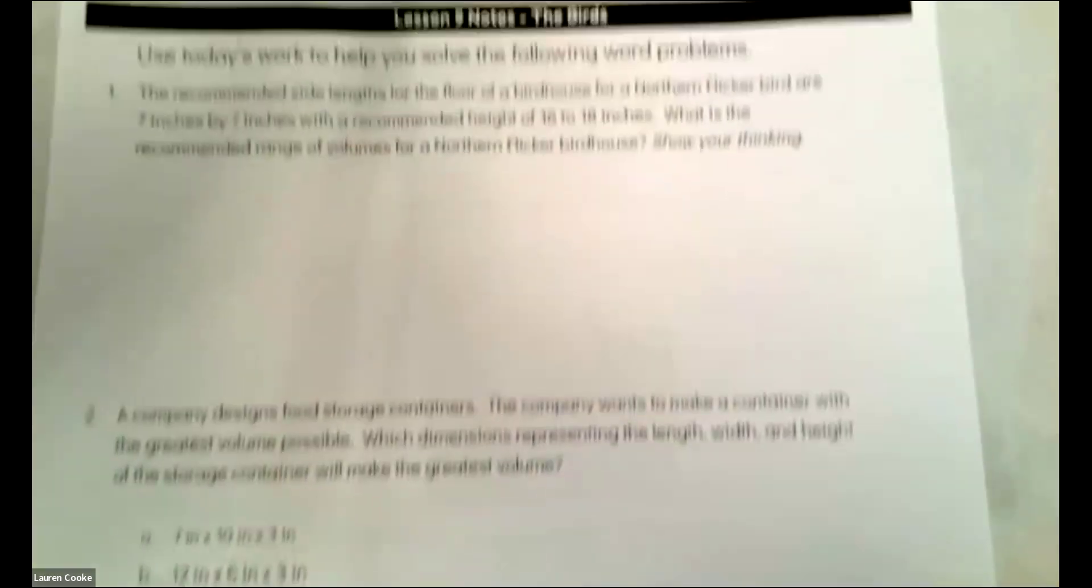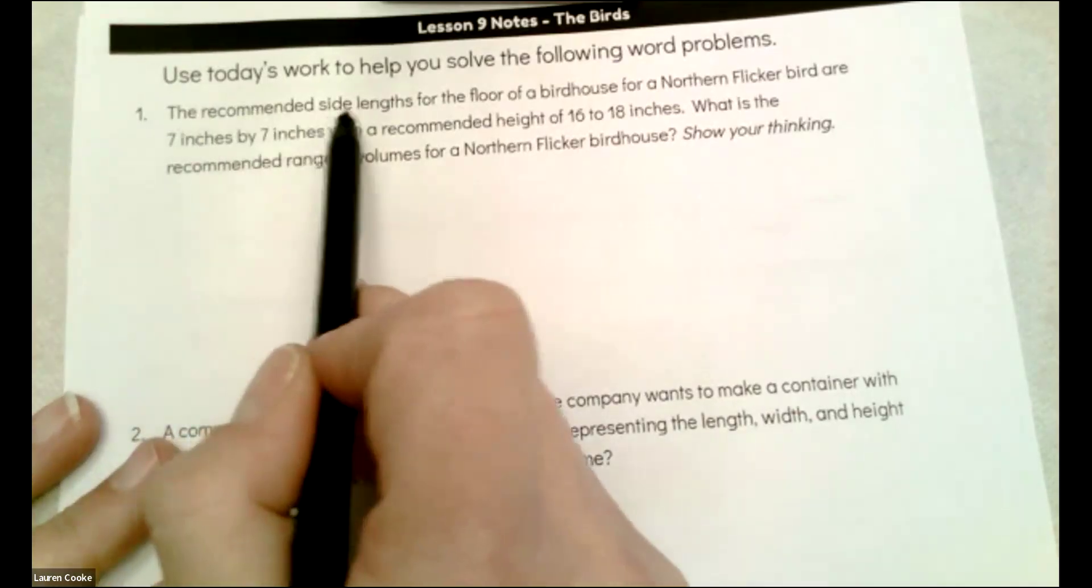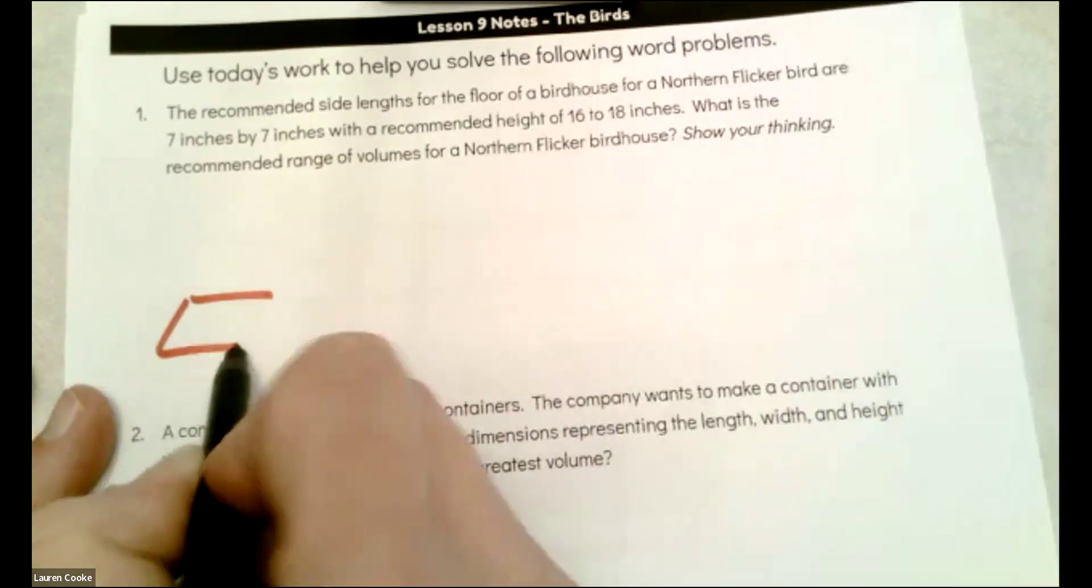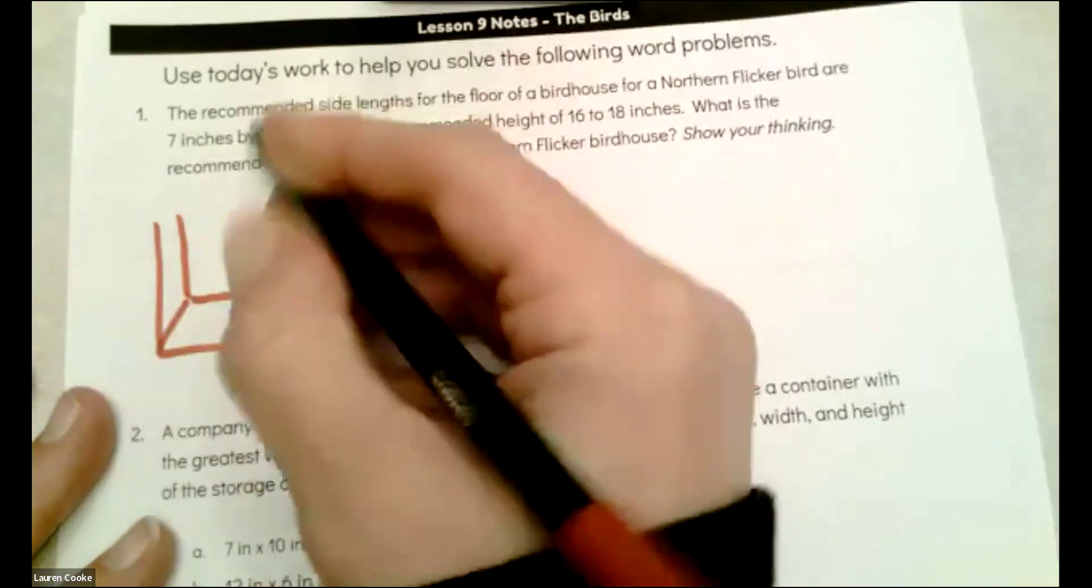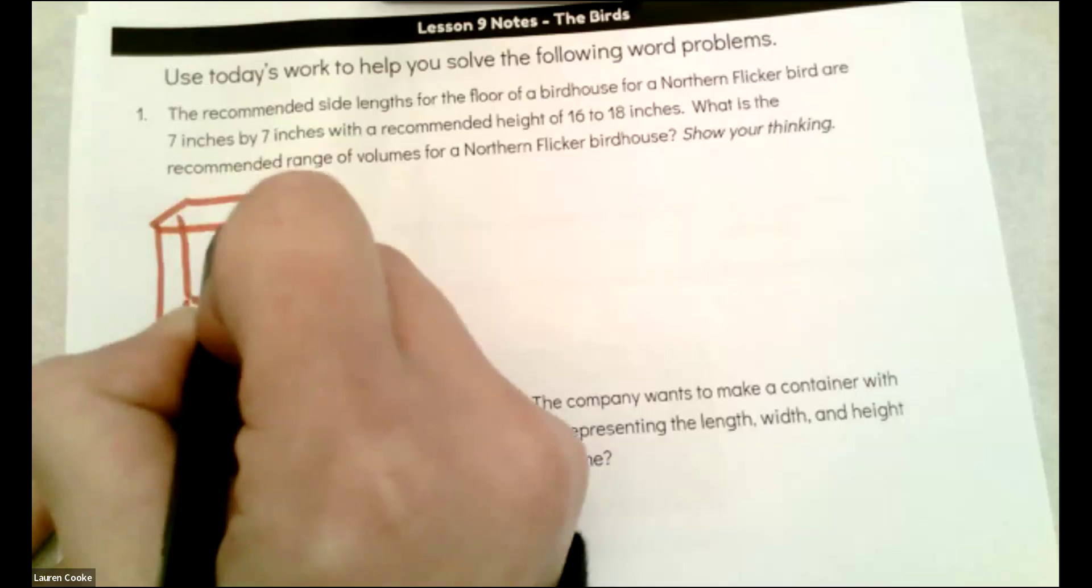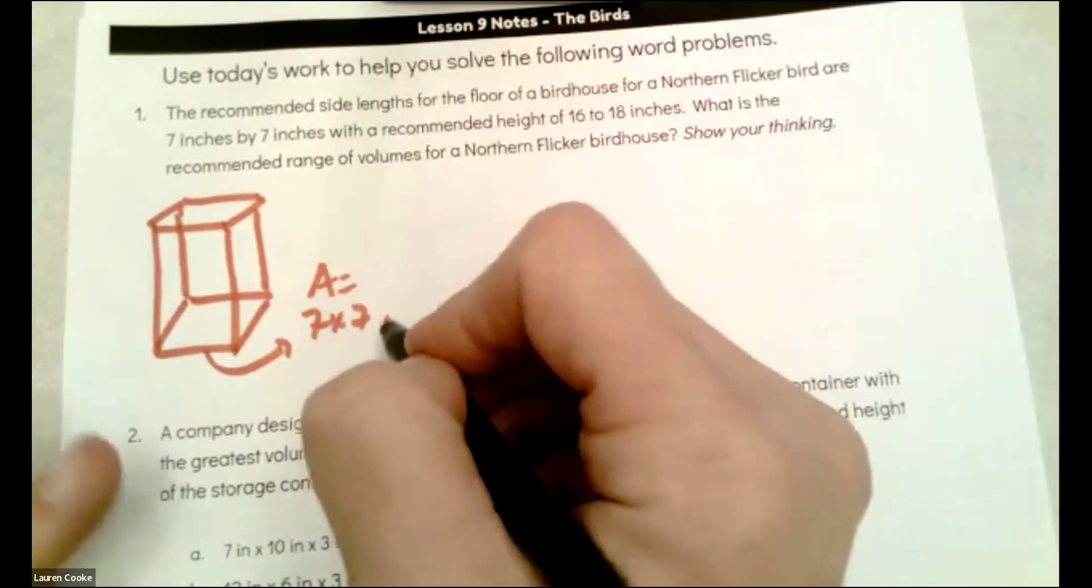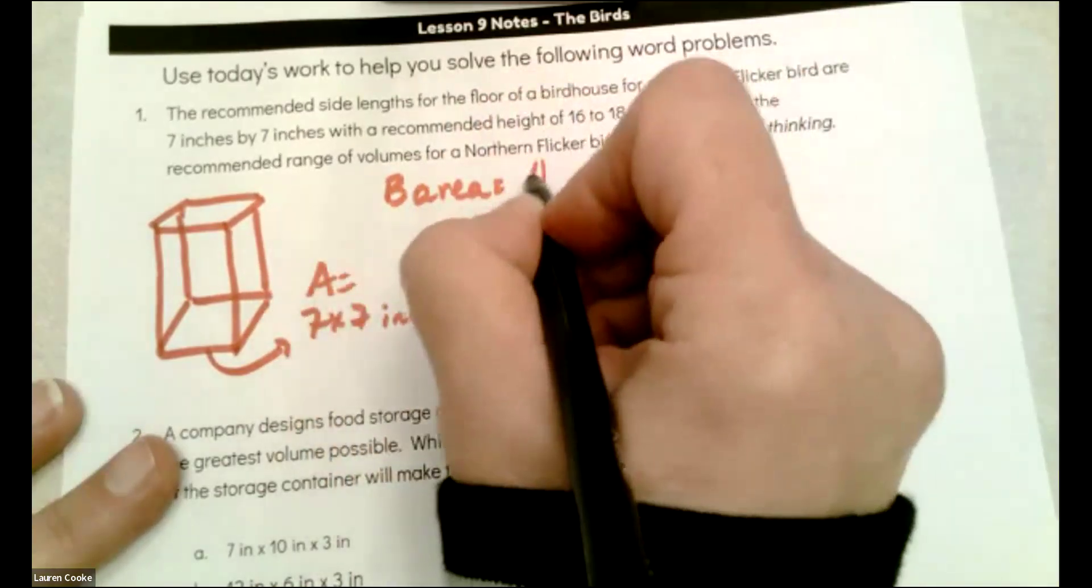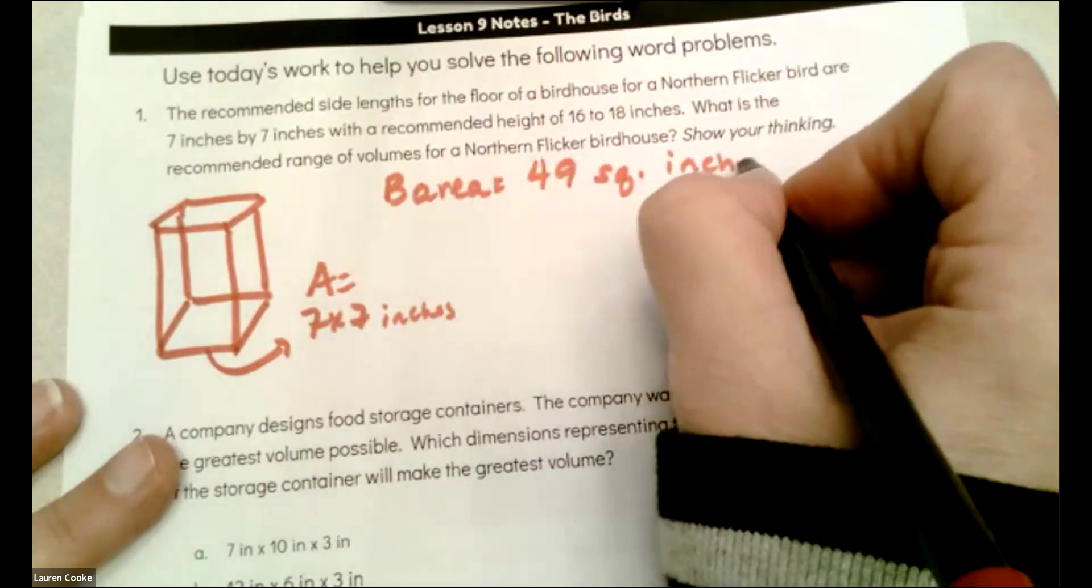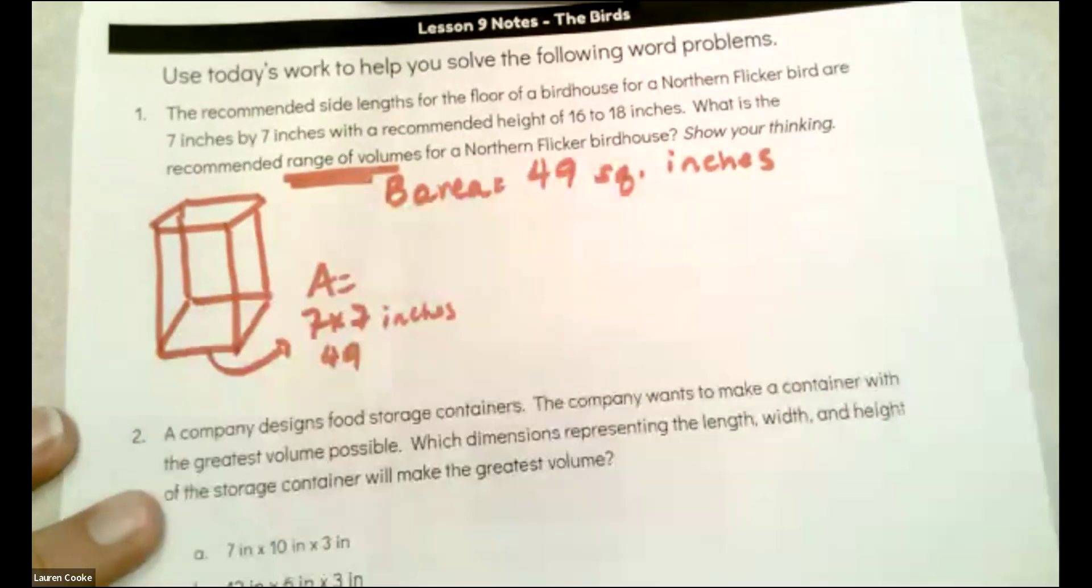Here we have some birds happening in this problem and then some beads and then some soccer. The recommended side lengths for the floor of a birdhouse. So my birdhouse is going to have a floor that looks like this and the dimensions for the floor, which is a square. So I'm looking for square units. Seven by seven inches. So that's area. Inches. So that means that my base area is 49 square inches. All right, because this is 49.